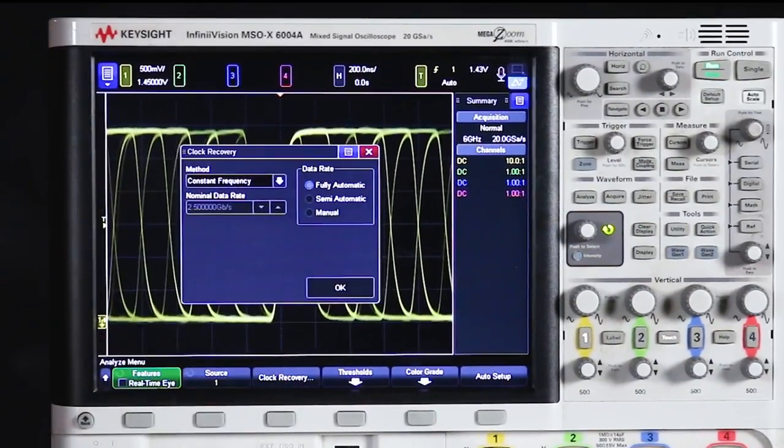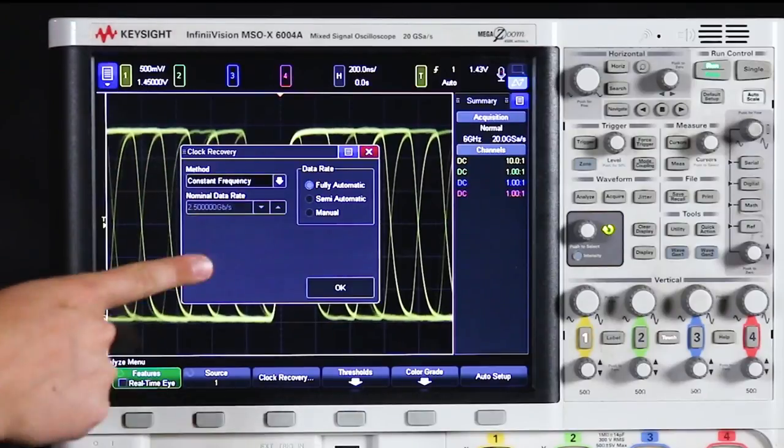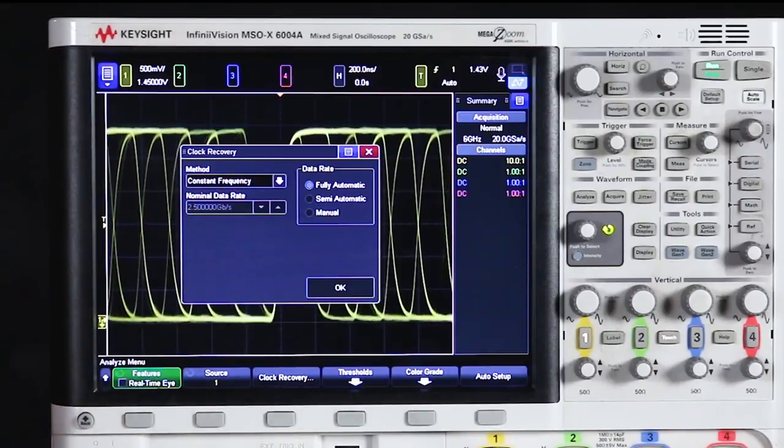Then we'll go into the clock recovery menu. And in here we can see the different data rate options that we have. So there's fully automatic which you would want to use in the case that you have no idea what the bitrate of the signal that you're working with is. And you want the scope to completely calculate that exact ideal bitrate for you.